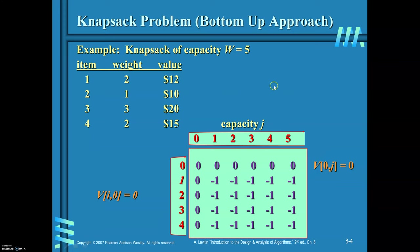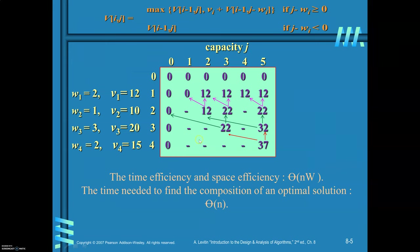For the same instance, we will apply this memory function algorithm and find the solution. Initially, all entries are equal to minus 1 except the 0th row and 0th column. We need to find V(N, W), which is V(4, 5). To find V(4, 5), you need V(3, 5) and V(3, 3). To find V(3, 5), you need V(2, 5) and V(2, 2). Similarly, to find V(3, 3), you need V(2, 3) and V(2, 0). Then only you can find the value of V(4, 5).